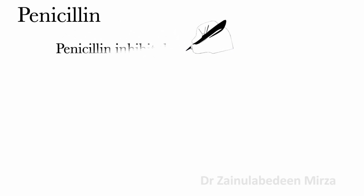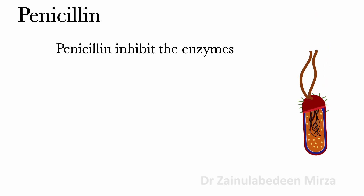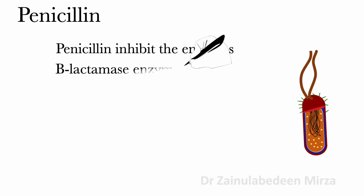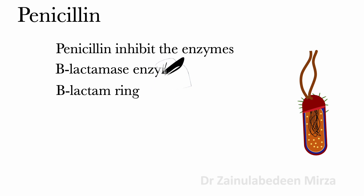Penicillin inhibits the enzymes involved in cross-linking the peptidoglycan layer of the cell wall, leading to osmotic lysis. Some bacteria have a beta-lactamase enzyme that hydrolyzes the beta-lactam ring, which is the bacteria's primary defense against penicillin.